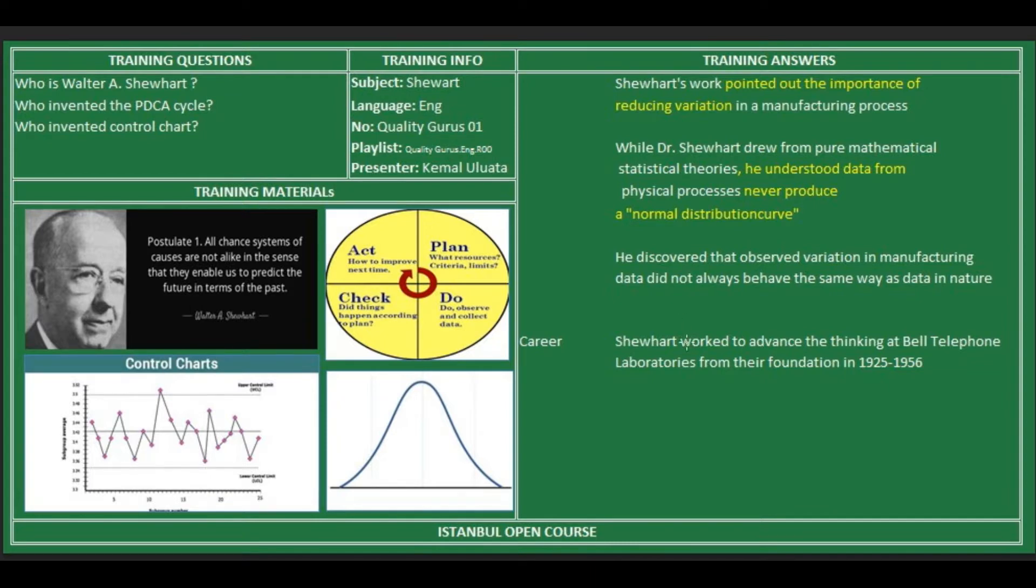There are two other notable contributions of Shewhart's. First, he pointed out the importance of reducing variation in a manufacturing process. You know the Gauss curve. But he also understood that data from physical processes never produce a normal distribution curve.